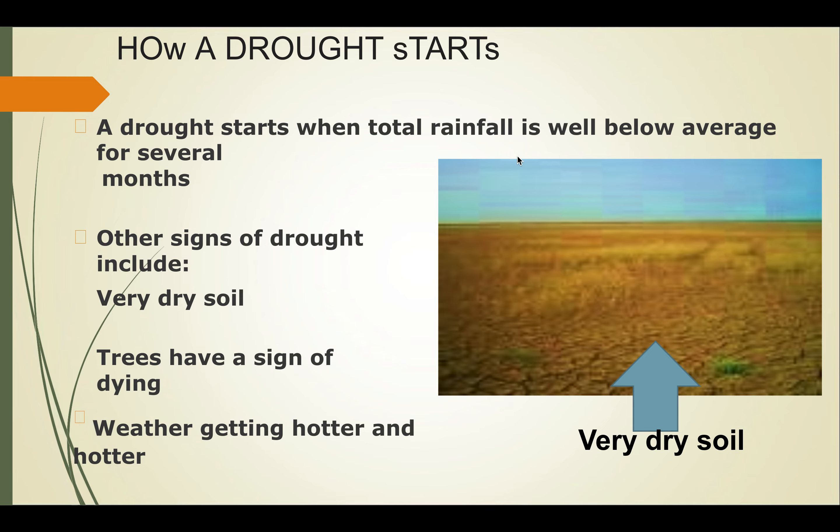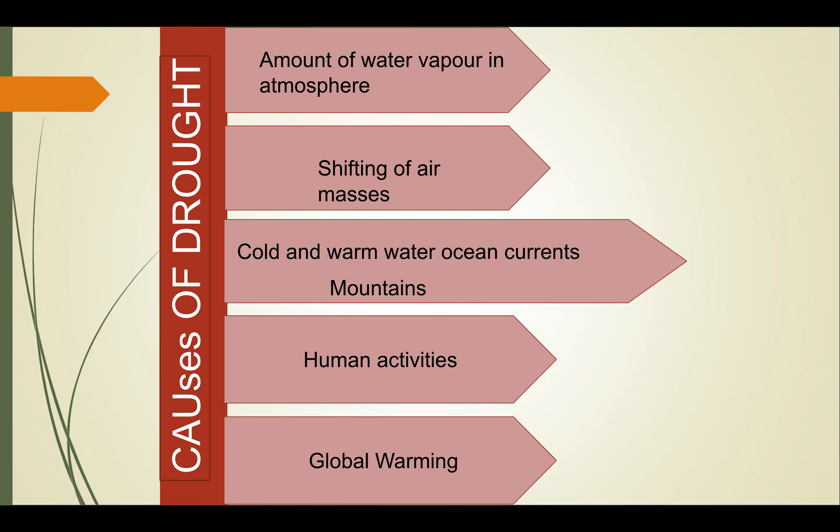The various causes of drought: the first is the amount of water vapor in the atmosphere, which is the most important cause. It creates precipitation — more rain, sleet, hail, and snow can occur when there is a moist low-pressure system. If there is above-average dry high-pressure air instead, less moisture is available to produce precipitation, because a dry high-pressure air system cannot hold as much water vapor.